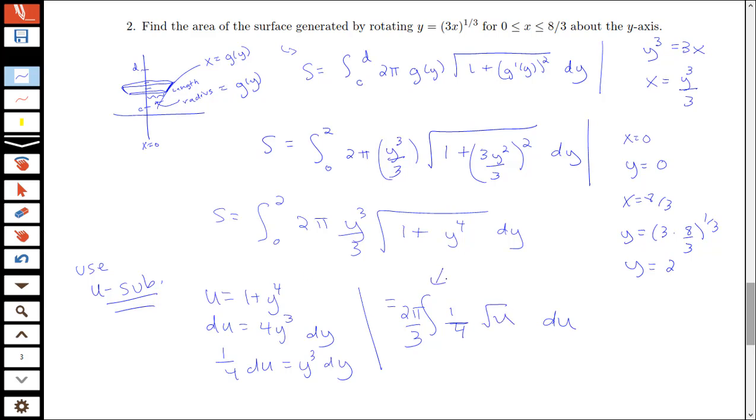I also need to remember to change to my u limits. So before we had limits from y equals 0 to y equals 2. Now we're going to have limits from u equals 1 plus 0, or 1, to u equals 1 plus 2⁴. So that's going to be 17. So remember u of 0 is going to be 1, and then we're going to have u of 2, which is 1 plus 2⁴. That's how we get that upper bound of 17.